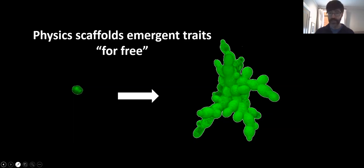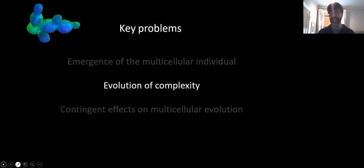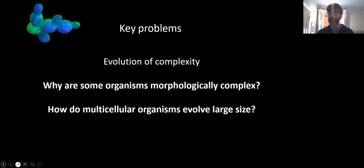So that's one set of problems. But now I'd like to talk about the next set, which deals with the evolution of complexity. Here, there's a couple of relevant questions. One is, why are some organisms morphologically complex while others aren't? And another related question is, how do multicellular organisms evolve large size?